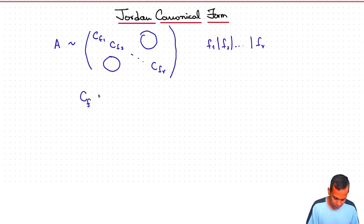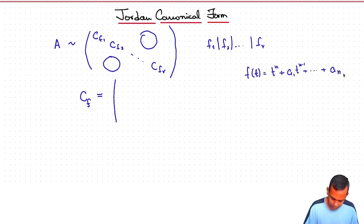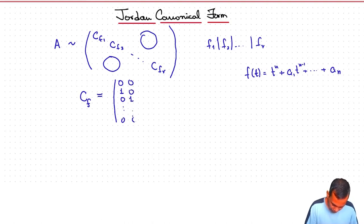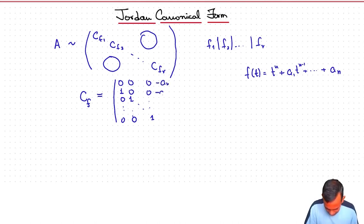The matrix CF is the companion matrix of the polynomial F. If F(T) is the polynomial T^n plus A1·T^(n-1) plus ... plus An, then CF is the n×n matrix with ones just below the diagonal, and in the last column you have the negatives of the coefficients of F: minus An, minus A(n-1), ..., minus A1.